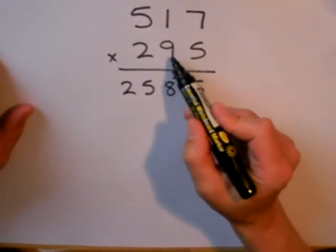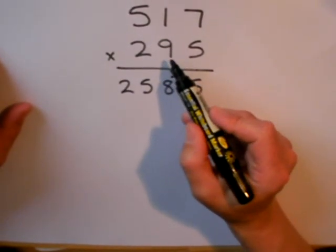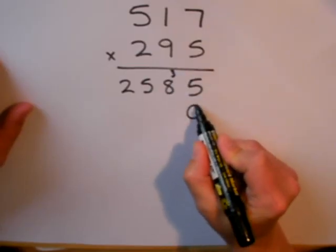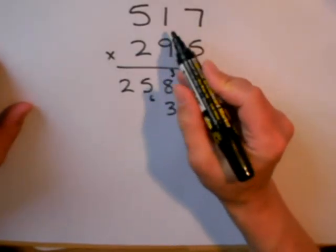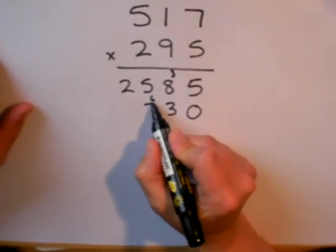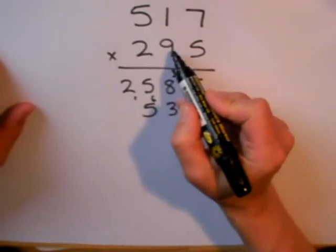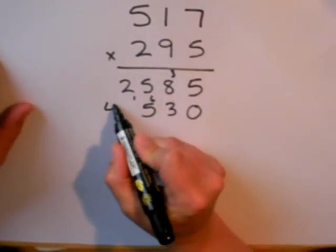Now I'm going to multiply by 90. Well, I'm going to multiply by 9, but I remember to put my 0 down. 9 sevens are 63. 9 ones are 9, plus 6 is 15. And 9 fives are 45, plus 1 is 46.